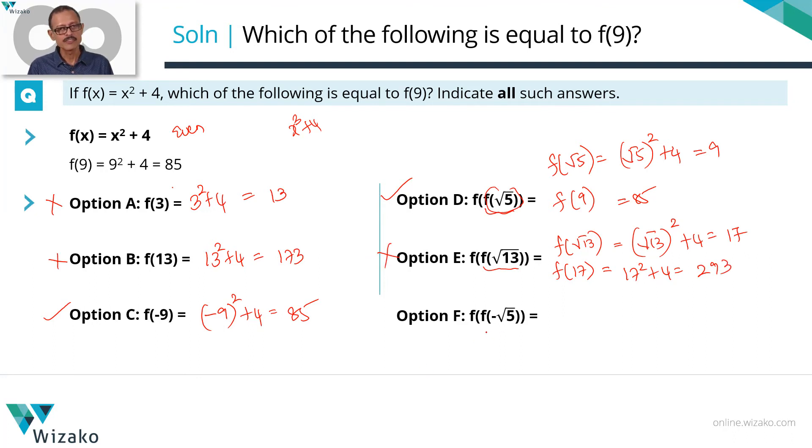The last answer option is f(f(-√5)). Let us compute the value of this. This is also a recursive function. f(-√5). The value of this is going to be -√5 squared plus 4. -√5 squared is 5. 5 plus 4 is equal to 9. So f(f(-√5)), this value is going to be equal to, instead of f(-√5) we can replace it with 9. So this is equal to f(9). So answer option F is also equal to f(9).